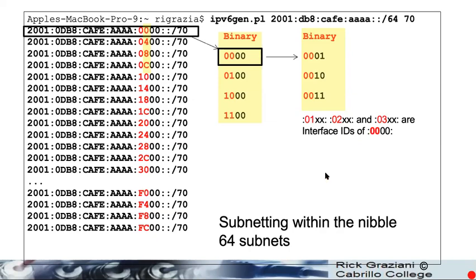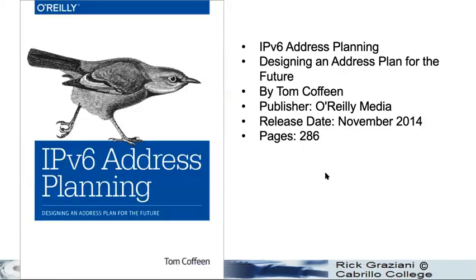Avoid subnetting within the nibble — you really don't need to be doing that. I wanted to mention a book by a friend of mine, Tom Coffey — IPv6 Address Planning. He wrote an entire book, it's a small O'Reilly book, a very good book on all the ways that you can easily manage your IPv6 address planning. And I believe he talks about IPv6 Gen as well. Very easy tool.